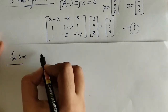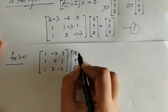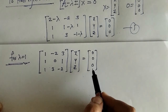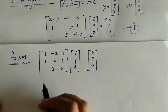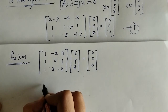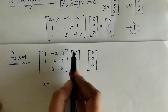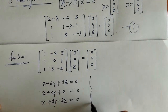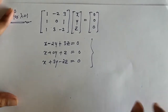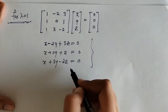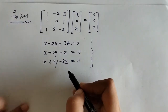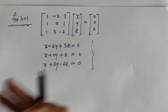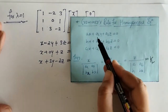We first put lambda equals 1 into the matrix equation. We simplify and get this matrix equation; multiplying out gives us a system of homogeneous equations. We have to solve these equations for the values of x, y, z. We will get proportional values of x, y, z, which we solve using Cramer's rule.